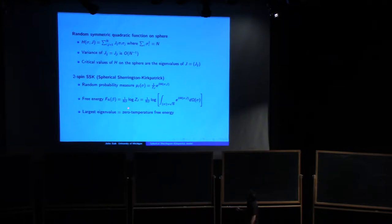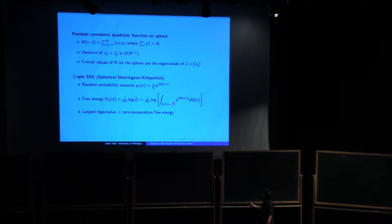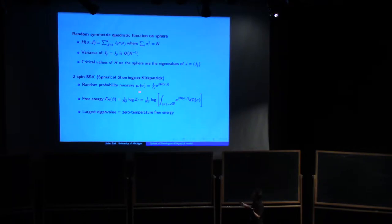One of the first objectives is the free energy, which is the log of the partition function, normalized by 1/(n*beta). Written out, that is the log of the integral over the sphere of e to the beta*H d-omega, the surface integral, involving the largest eigenvalue of matrix J. Since we integrated over sigma, this is a random variable depending on J.